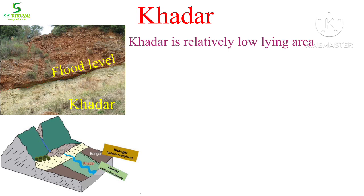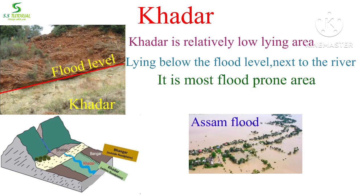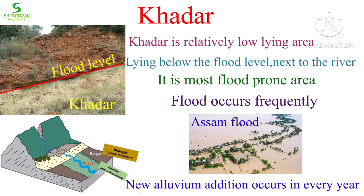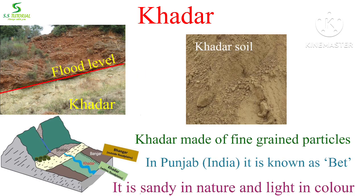Young alluvial soil or Khadar is a relatively low-lying area, below the flood level or next to the river. That's why it is the most flood-prone area — almost every year floods occur in this low-lying area. Because of this, it is renewed almost every year. As it is enriched every year, this type of soil is more fertile and agriculture is much more suitable here, so intensive agricultural practice is done.